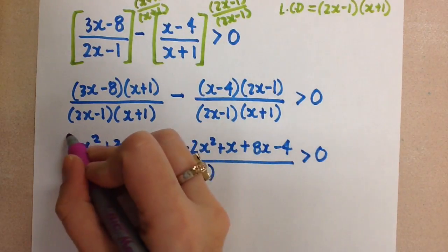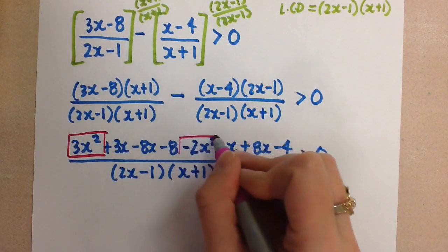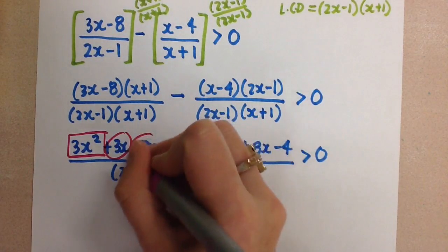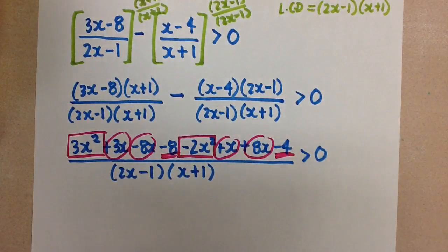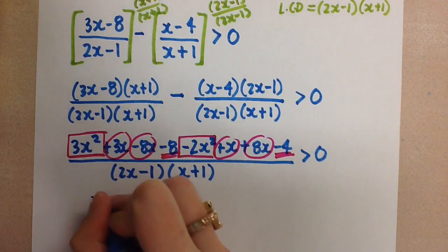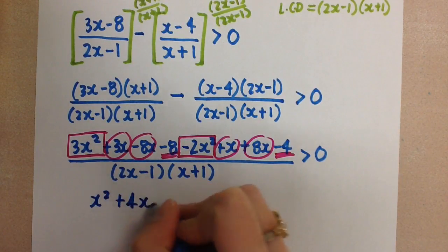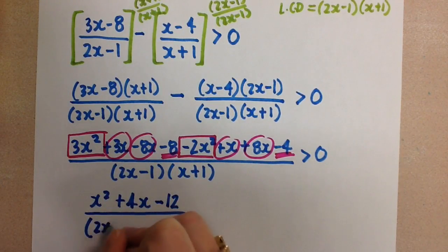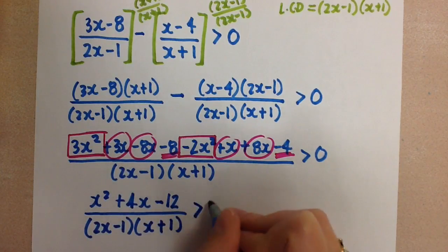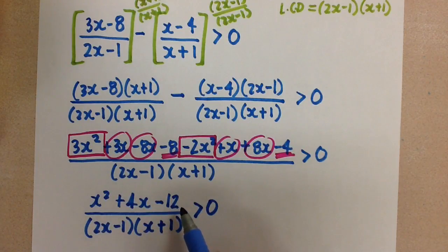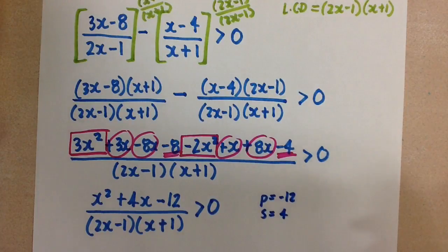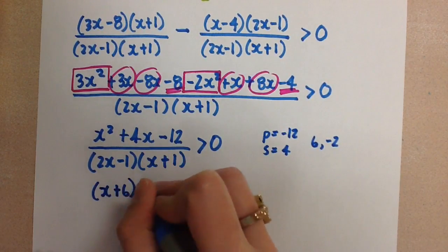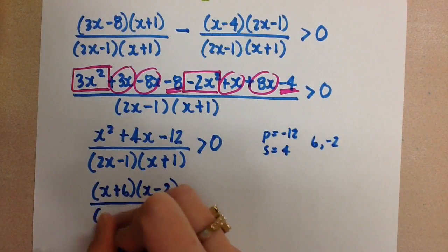So doing that for all terms gives us +x + 8x − 4 in the numerator, over (2x − 1)(x + 1), still greater than 0. Now we combine all the like terms: the x² terms, the x terms, and the constants. That gives us x² + 4x − 12 over (2x − 1)(x + 1). This is a simple trinomial in the numerator. The product is −12 and the sum is +4, so our two numbers are +6 and −2, and we can factor it as (x + 6)(x − 2).